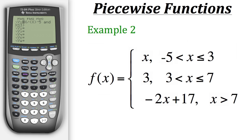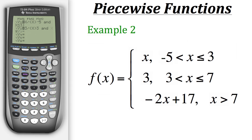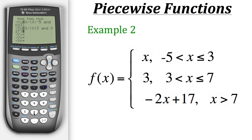Now let's proceed to do the rest of the piecewise function. Let's put in the second part: y equals 3. And now let's put in its conditions. The first one is x is greater than 3 — so we'll type in x is greater than 3. It also has a second condition, so we need to put an AND statement there. We'll go over to LOGIC and hit enter on AND. Now we need to put x is less than or equal to 7, and then close the parentheses.